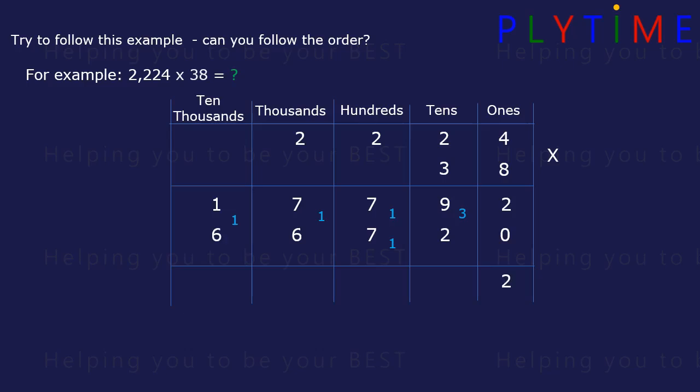2 plus 0 is 2. 9 plus 2. 7 plus 7 plus the 1 carried over. 7 plus 6 plus the 1 carried over. And 1 plus 6 plus 1. We end up with 84,512.